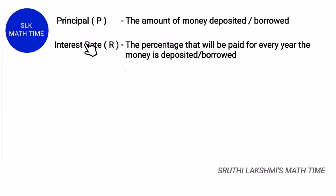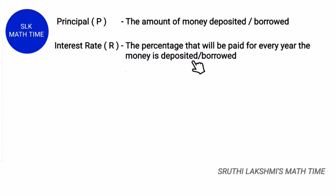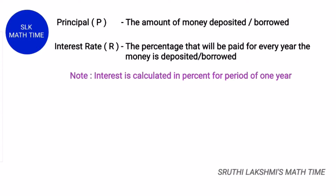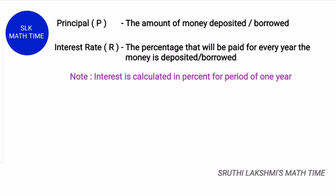Interest rate is the percentage that is paid for every year the money is being deposited or borrowed. Interest rate is represented by the letter R, and it is always calculated in percent for a duration of one year.